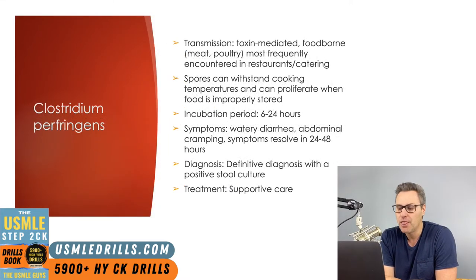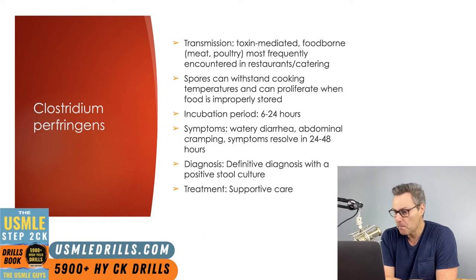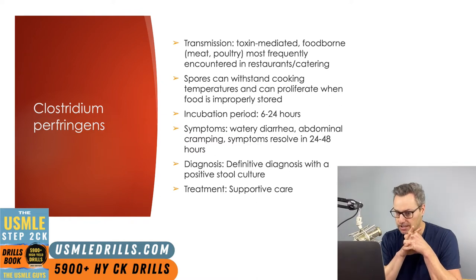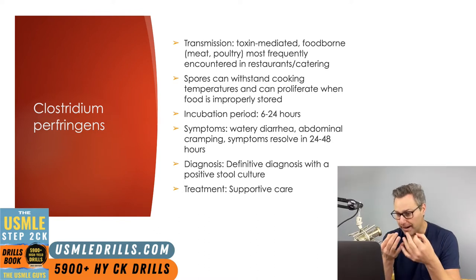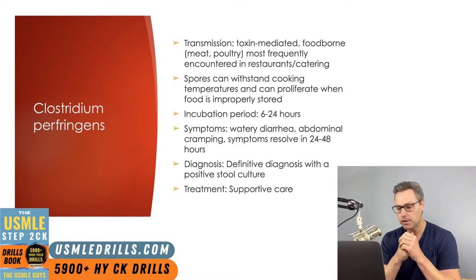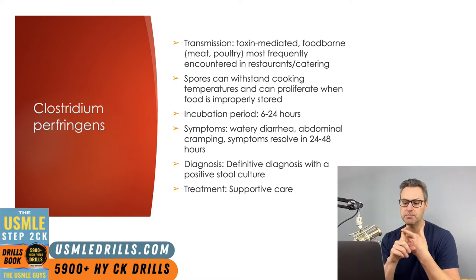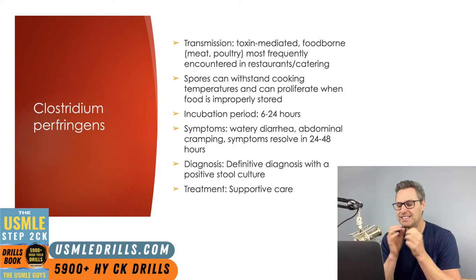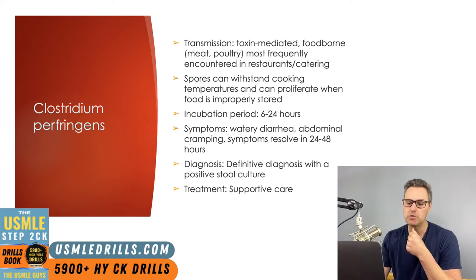Next up, we have Clostridium perfringens. This carries out its pathogenic effect via a toxin, and transmission occurs with the ingestion of contaminated food — mainly meat and poultry — and is most frequently encountered in restaurants or when catering services have been used. The spores associated with this organism can withstand cooking temperatures and can proliferate when food isn't properly stored. The incubation period is anywhere from six to 24 hours, and symptoms include watery diarrhea and abdominal cramping. Symptoms typically resolve within 24 to 48 hours, and the definitive diagnosis can be made with a positive stool culture. Treatment is supportive care.